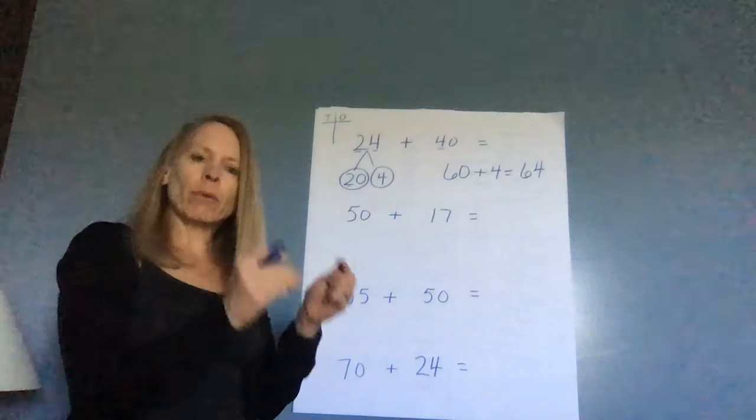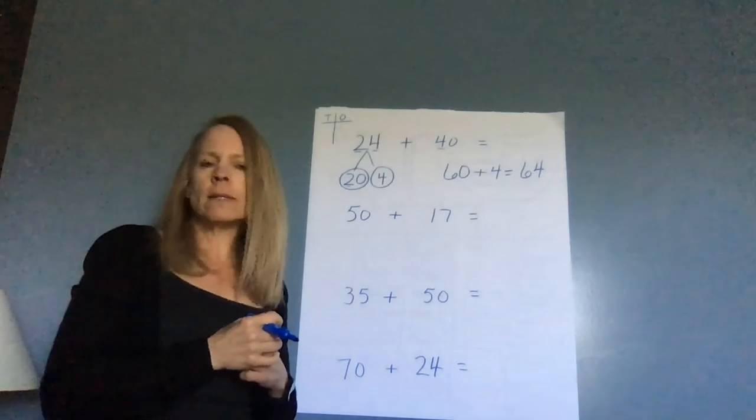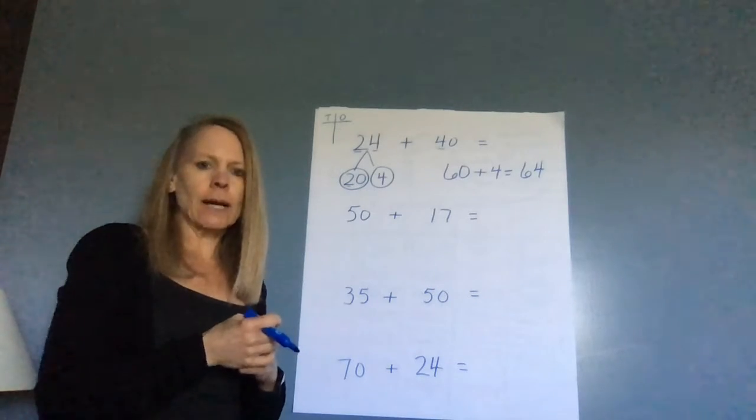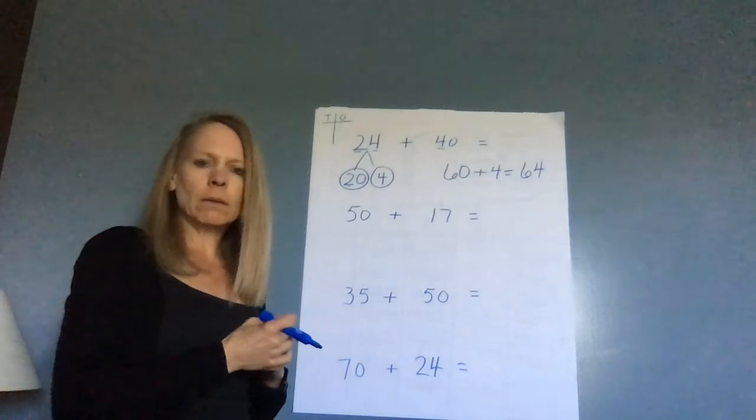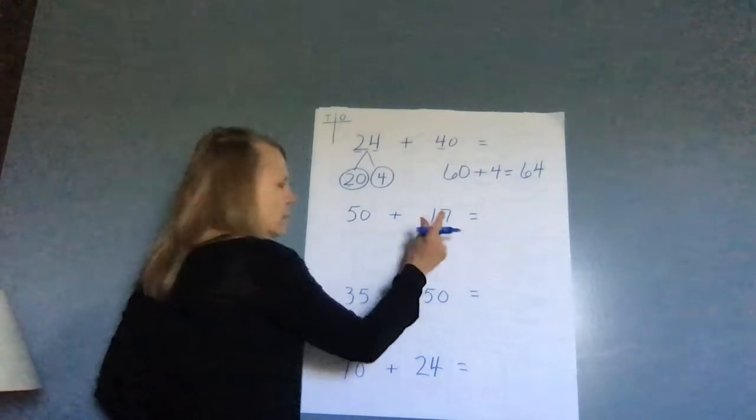So we break apart the number that doesn't have a zero in the ones place and add it to the other ten. Let's do another one. Looking at these two numbers, which one am I going to break apart? Hopefully you said 17. When I look at 17, I'm looking at my two digits.